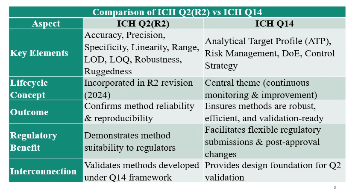Key elements of ICH Q2 are accuracy, precision, specificity, linearity, range, LOD, LOQ, robustness, and ruggedness. Key elements of ICH Q14 are the Analytical Target Profile (ATP), risk management, DOE, and control strategy. Q2 incorporates lifecycle concepts in its R2 revision; Q14 has continuous monitoring and improvement as its central theme. The outcome of Q2 is confirming method reliability and reproducibility; Q14 ensures methods are robust, efficient, and validation-ready. The regulatory benefit of Q2 is demonstrating method reliability to regulators; Q14 facilitates flexible regulatory submissions and post-approval changes.